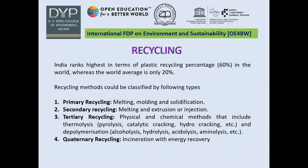So what are the different methods available for recycling? Primary recycling involves collecting the plastic, melting it, moulding it and solidifying it into a form where it can be utilized. The second method is melting and using extrusion or injection moulding machines so that the melted plastic can be converted into some other form or product.